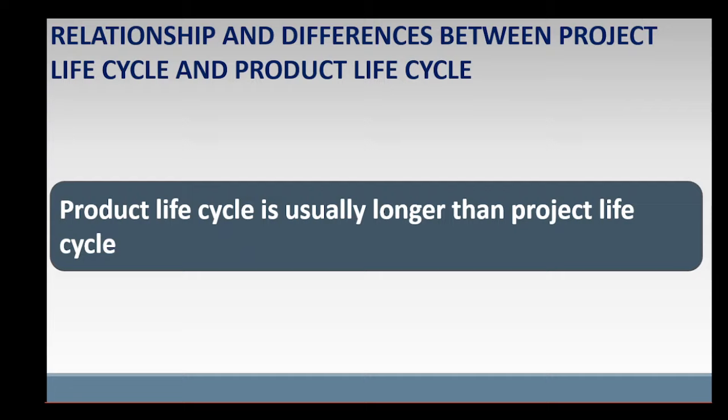Product life cycle is usually longer than project life cycle. And while a project life cycle has a definite end, a product life cycle may not have a definite end or may be extended. For example, Coca-Cola has been in the market for over 100 years.